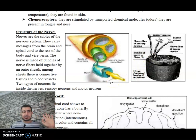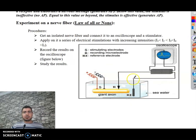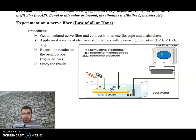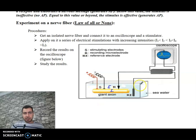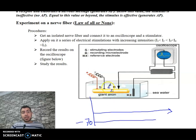In this experiment, we take a neuron and insert the electrode into the intracellular medium — this is the intracellular medium — while the other electrode is in the extracellular medium. We place a stimulator here. The oscilloscope will quickly record a potential difference equal to minus 70 millivolts, which is the resting potential, as we already know.